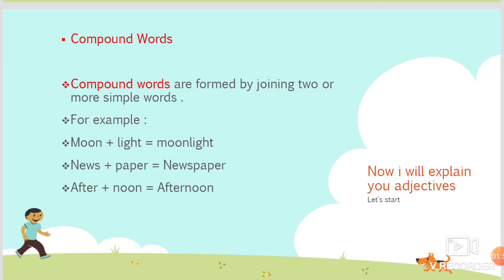Compound words are formed by joining two or more simple words. For example, moon and light make moonlight; news and paper make newspaper; and afternoon is another example of a compound word.